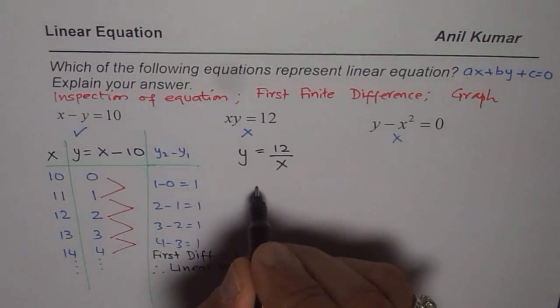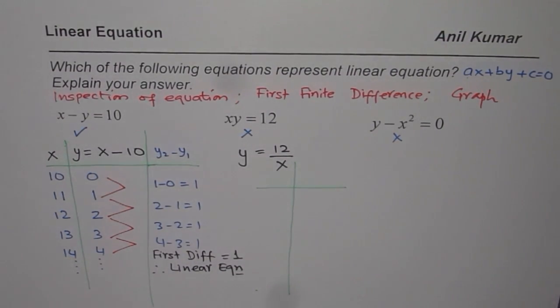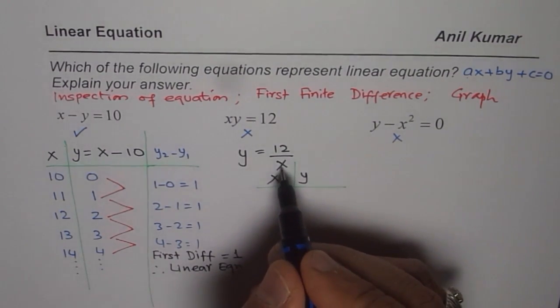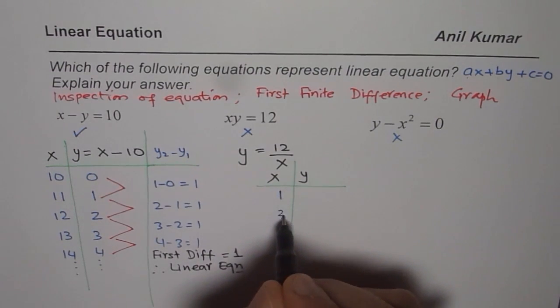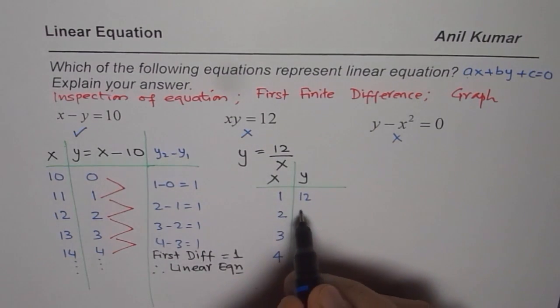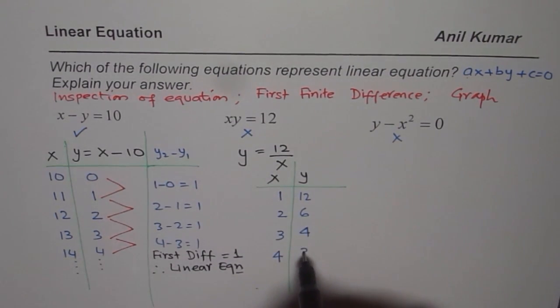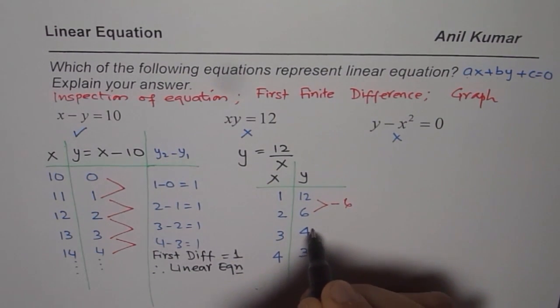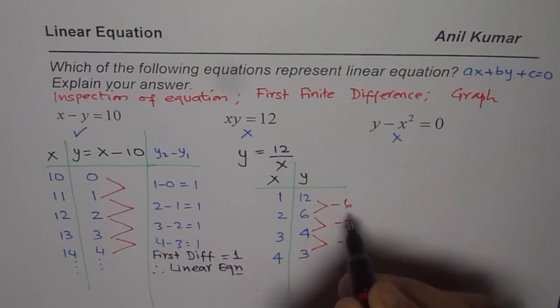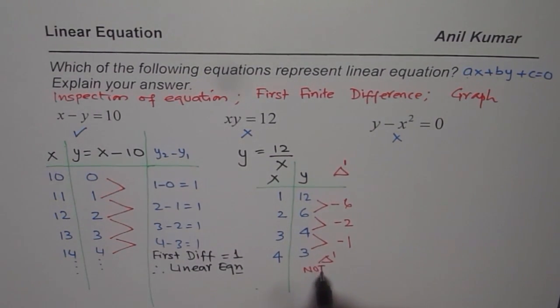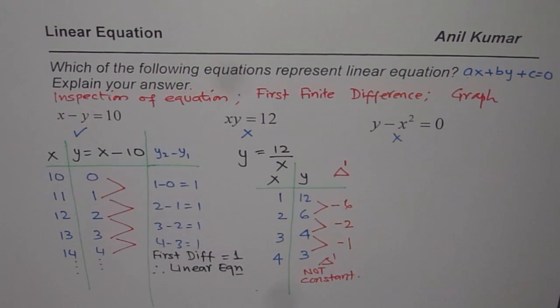If you make a table of values like this, let us do that. We will just take few values. You could take some values for x and y. Let us say x value, we cannot take 0, but we can take 1, 2, 3, 4 for example. For 1, 12 divided by 1 is 12. For 2, 12 divided by 2 is 6. For 3 it would be 4. For 4 it is 3. Now, as you can see, the difference here is 6 minus 12 is minus 6. 4 minus 6 is minus 2. And 3 minus 4 is minus 1. So, this is first difference. We say first difference is not constant. So this is not linear.